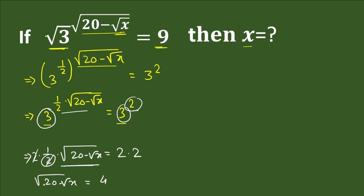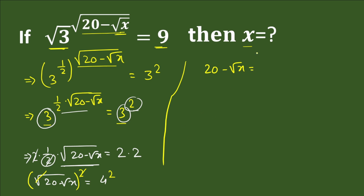Now to solve this expression we have a square root, so we will square both sides to cancel the square root. On the left hand side the square root and the square cancel, leaving 20 minus square root x. On the right hand side, 4 squared equals 16.